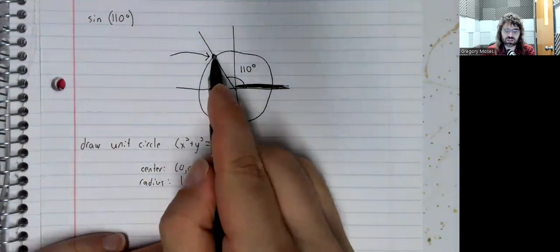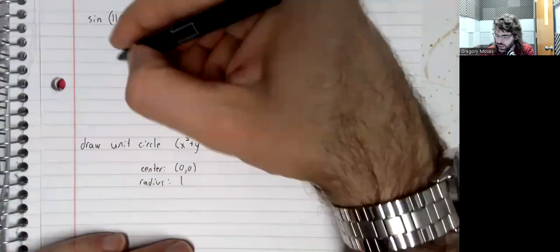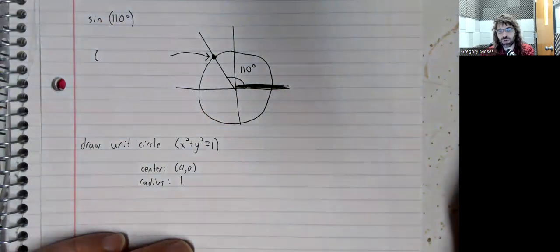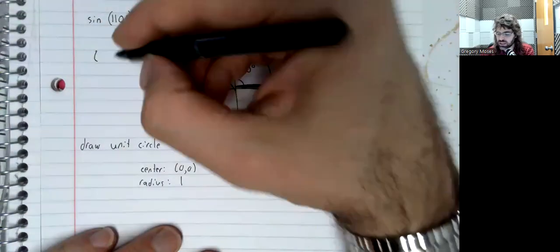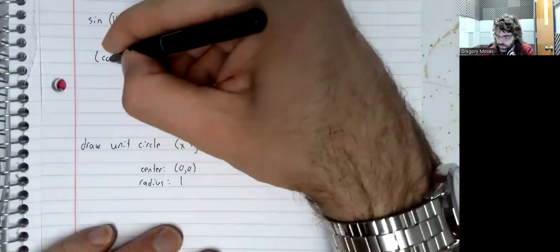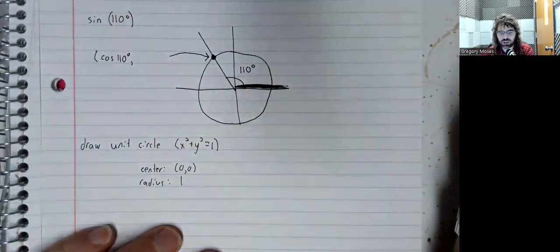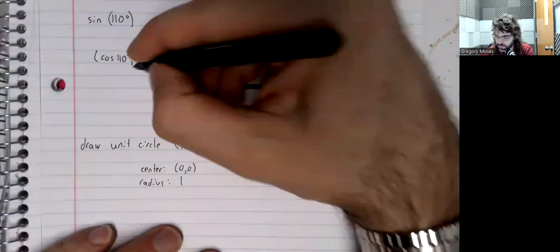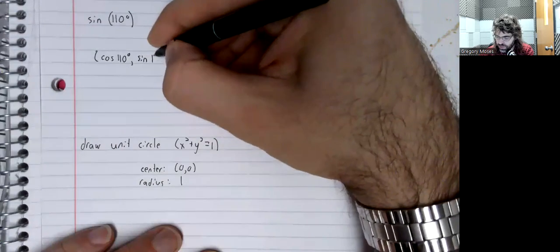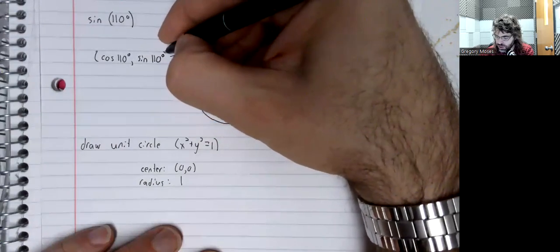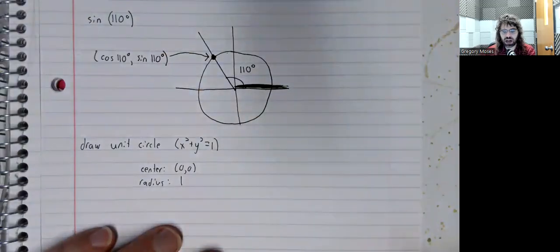And this point that it hits the circle at is going to have as its x-coordinate the cosine of 110 degrees, and it's going to have as its y-coordinate the sine of 110 degrees. And this is the unit circle definition of the sine and the cosine.